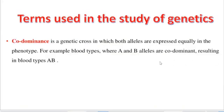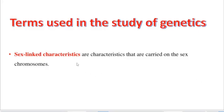We now look at codominance. Codominance is a genetic cross in which both alleles are expressed equally in the phenotype. For example, in blood types where we have A and B alleles — these are codominant and can result in blood type AB. We also look at sex-linked characteristics — characteristics that are carried on the sex chromosomes. Examples include hemophilia and red-green color blindness.